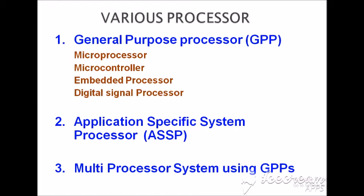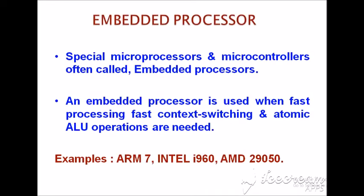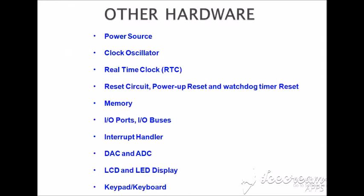Other hardware used in embedded systems includes: power source, which is one of the main important constraints for developing hardware; clock oscillators, which generate frequencies to run a project or individual process; real-time clock; reset circuit; power-up reset; watchdog timer; memory; input/outputs; interrupt handler; DAC and ADC; LCD and LED displays; and keyboard. These are all the hardware components used inside an embedded system to get a proper output for a basic process.